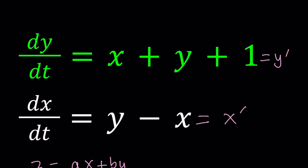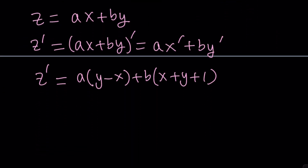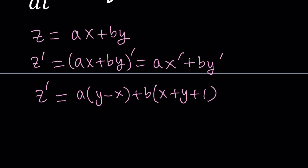When we named those y prime and x prime, we already knew those. My goal is the following: we wrote z as a linear combination of x and y, and I want to write z prime as a linear function of z. In other words, I want to be able to write z prime as a constant times z plus another constant.